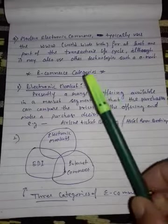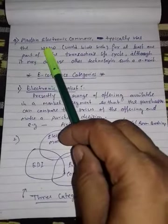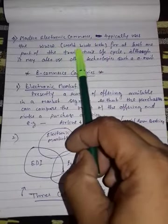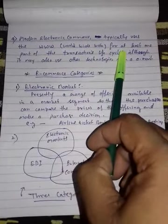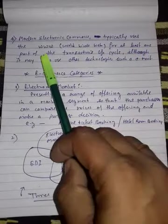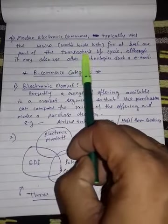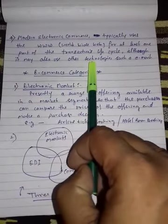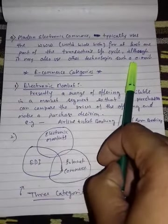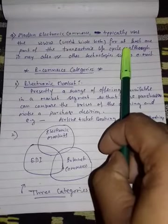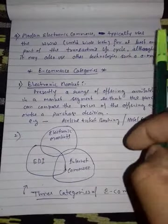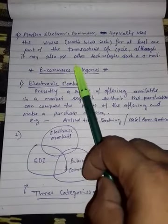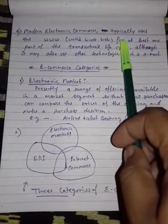In modern terms, electronic commerce typically uses the WWW — the World Wide Web — for at least one part of the transaction lifecycle, although it may also use other technologies such as email. There are various sources of electronic commerce which we use for conducting business transactions.